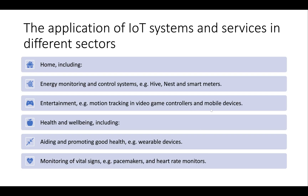Now for the application of IoT systems and services in different sectors. The home sector includes energy monitoring and control systems - examples are Hive, Nest, and smart meters. The entertainment sector includes motion tracking in video games, controllers, and mobile devices. The health and well-being sector includes wearable devices and smart watches that track heart rate and monitor vital signs.